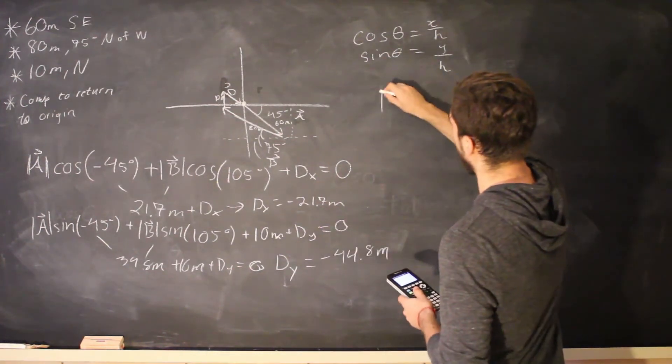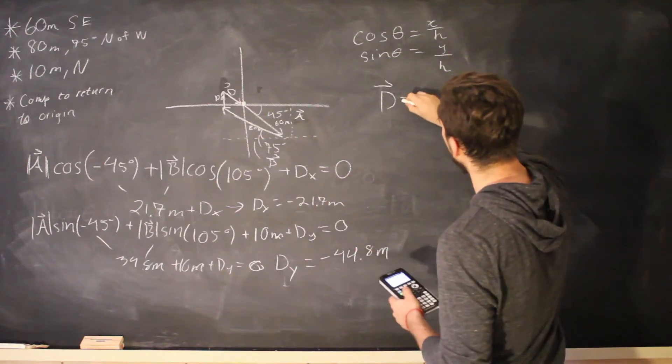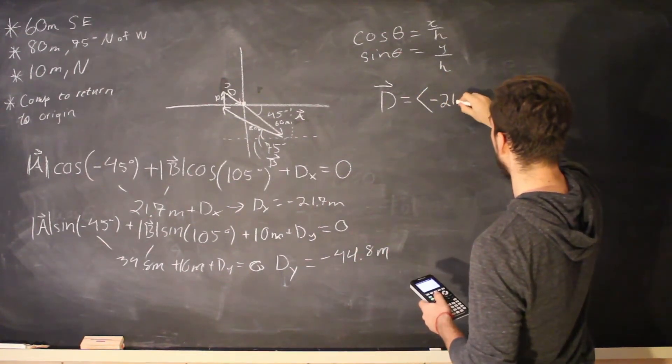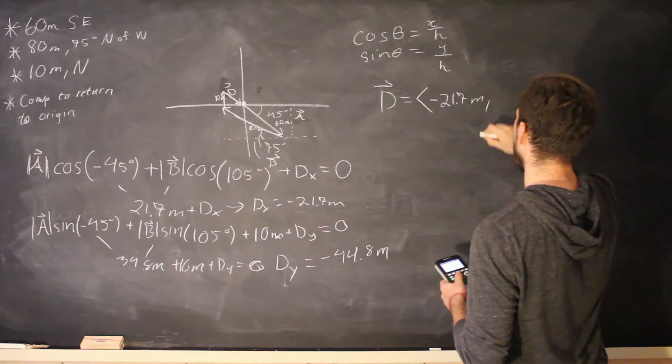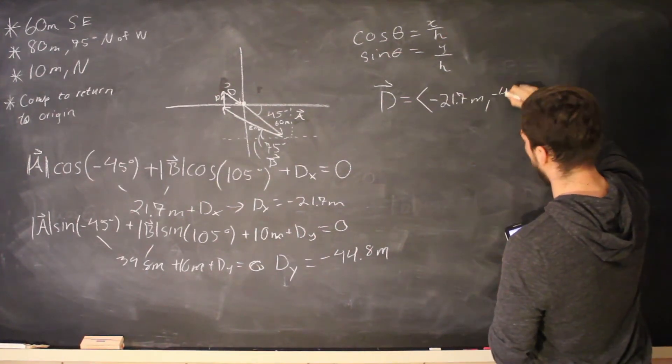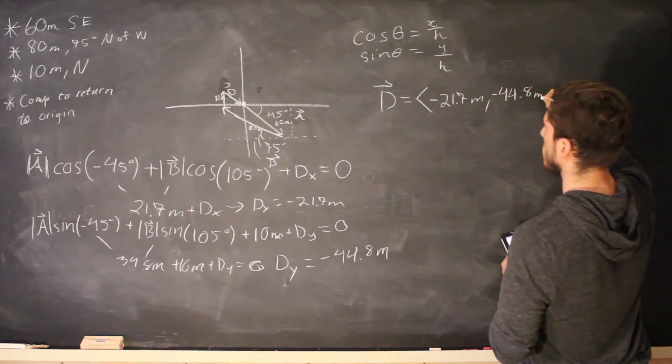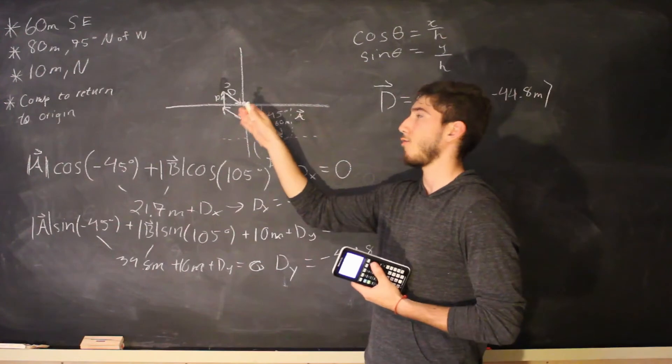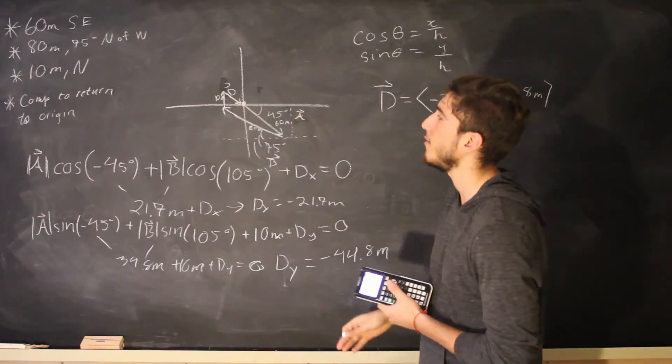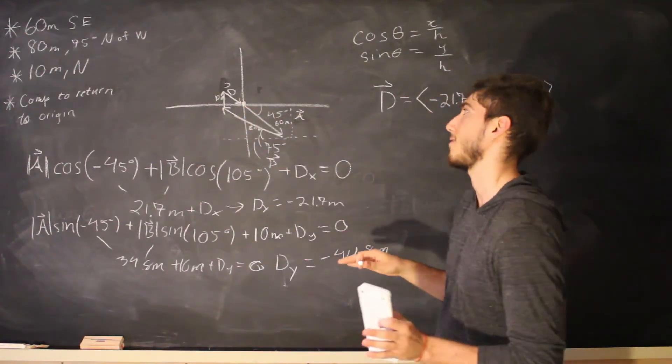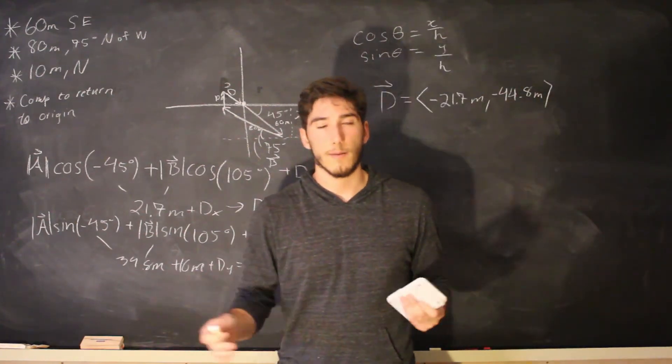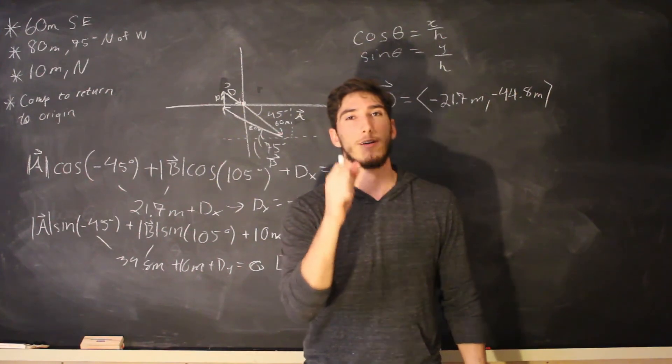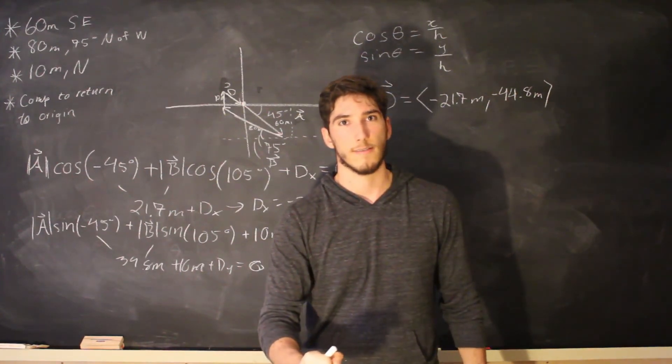So our vector d has components negative 21.7 meters comma negative 44.8 meters. So obviously as you can see my graph is not exactly to scale. It's better than I did last time I can tell you that. And that's going to be it for the vectors examples and concepts and everything. Next video we talk about real physics. See you then.